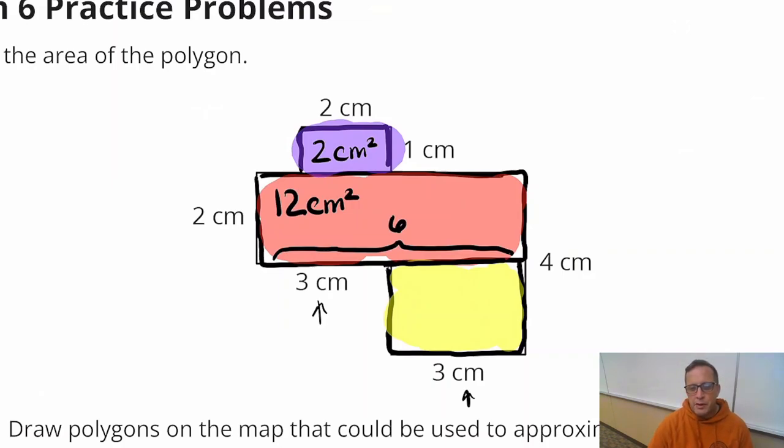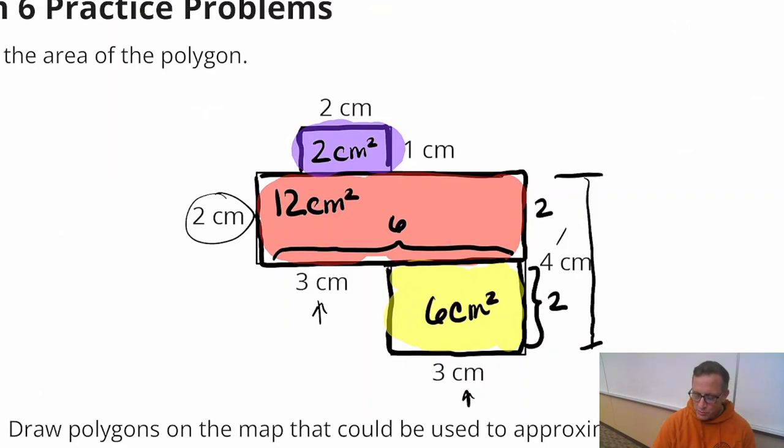And then the bottom part right there, we've got the length and we need the width. The width is 4, right? No, it's not. Four is from here to here. But if you look over here, you'll notice that is 2. So that's 2 right there. So that means this must be 2 because 2 plus 2 is 4. So 3 times 2 is 6 square centimeters.